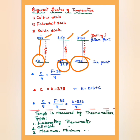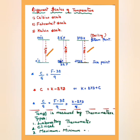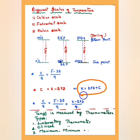The number of divisions on each scale: Celsius has 100 − 0 = 100 divisions; Kelvin also has 373 − 273 = 100 divisions; Fahrenheit has 212 − 32 = 180 divisions. The formula relating Celsius and Fahrenheit is C/5 = (F − 32)/9. The formula relating Celsius and Kelvin is C = K − 273, or equivalently K = 273 + C.